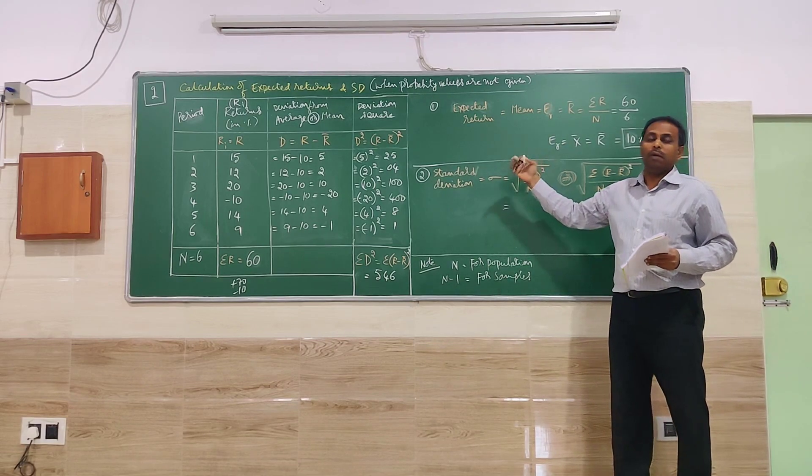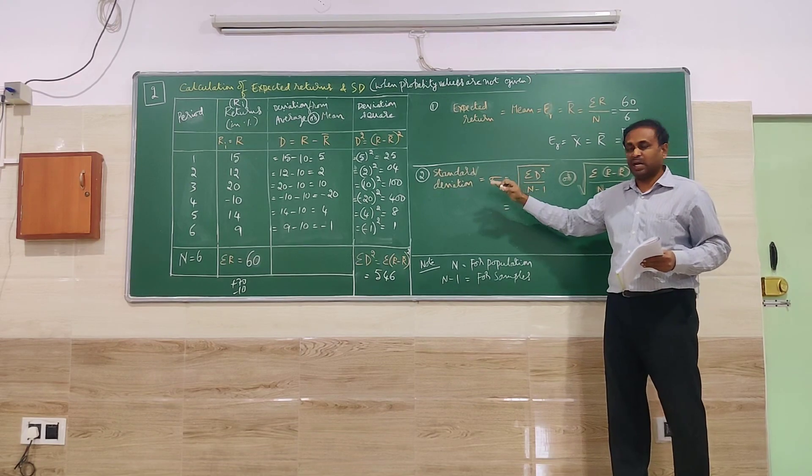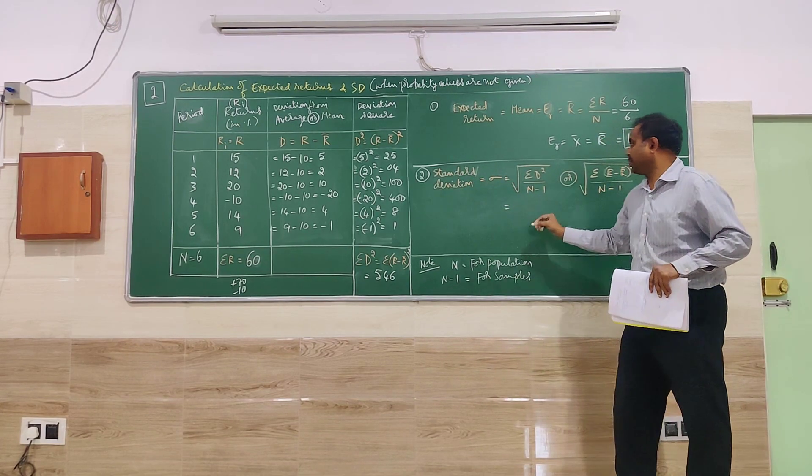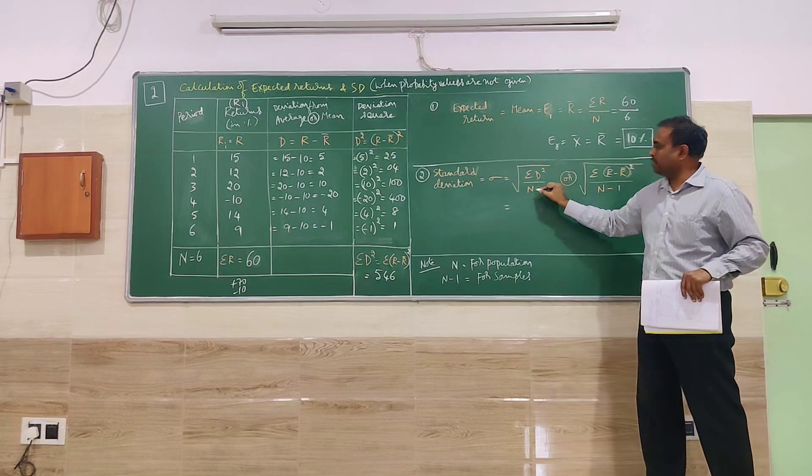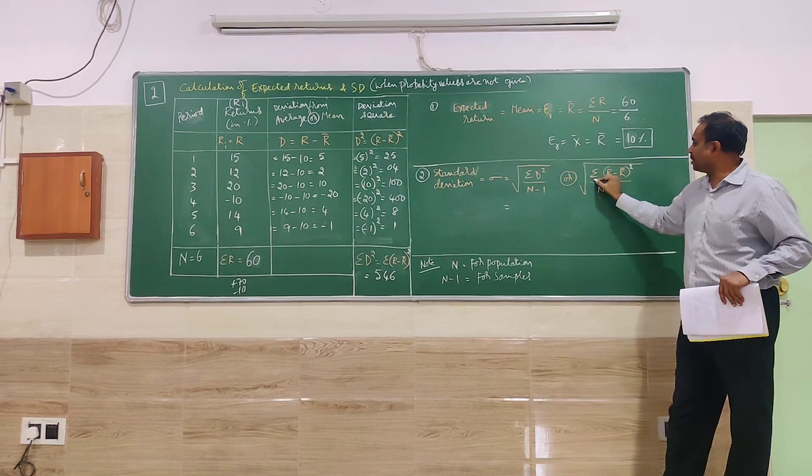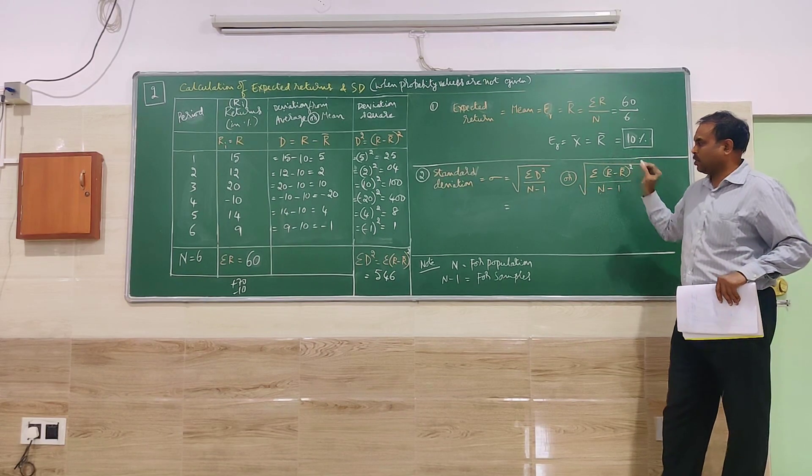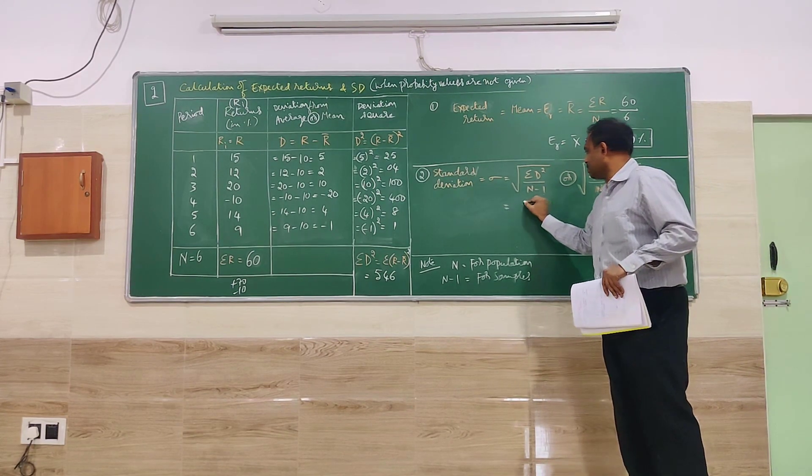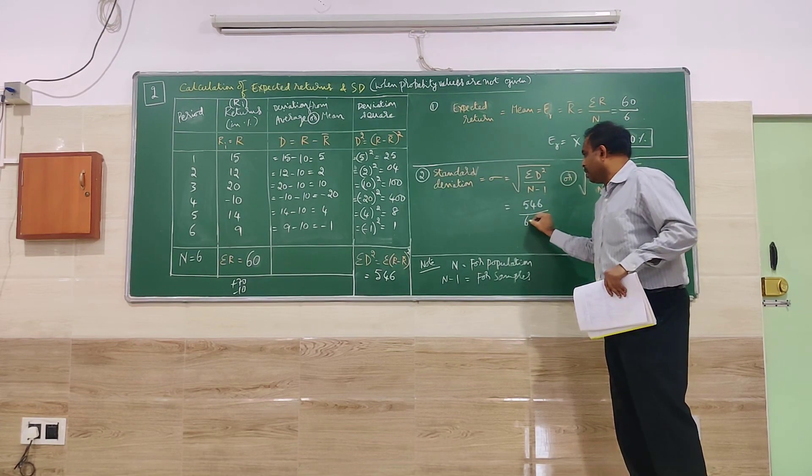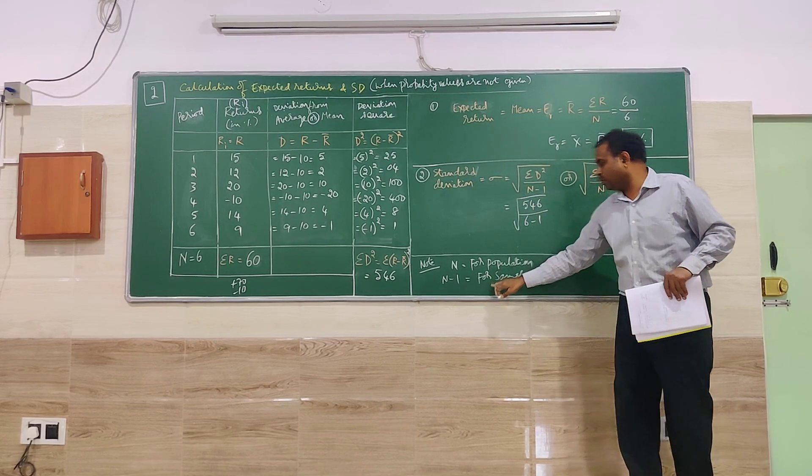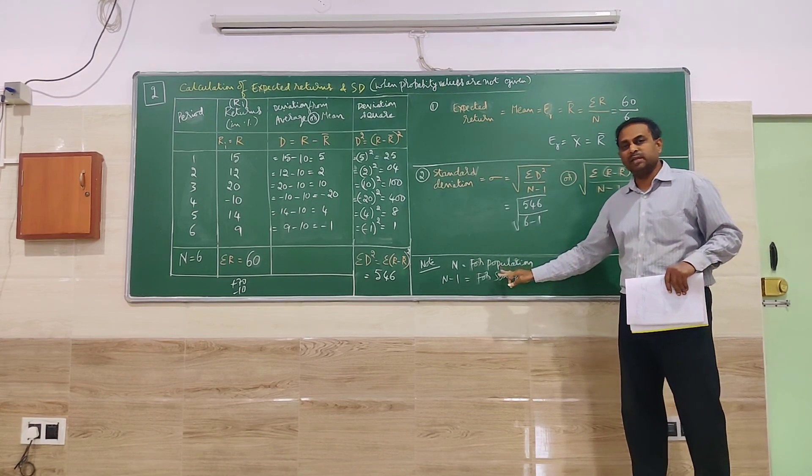we are calculating standard deviation without calculating variance. Straight away we are getting into calculation of SD. So in the previous problem first we have found variance, then we have gone for standard deviation. Here straight away we are finding standard deviation. So I can use any formula here. Square root of summation D square divided by N minus 1, or summation R minus R bar square divided by N minus 1 whole square. So I will go for this. Both are same. I have used N minus 1.